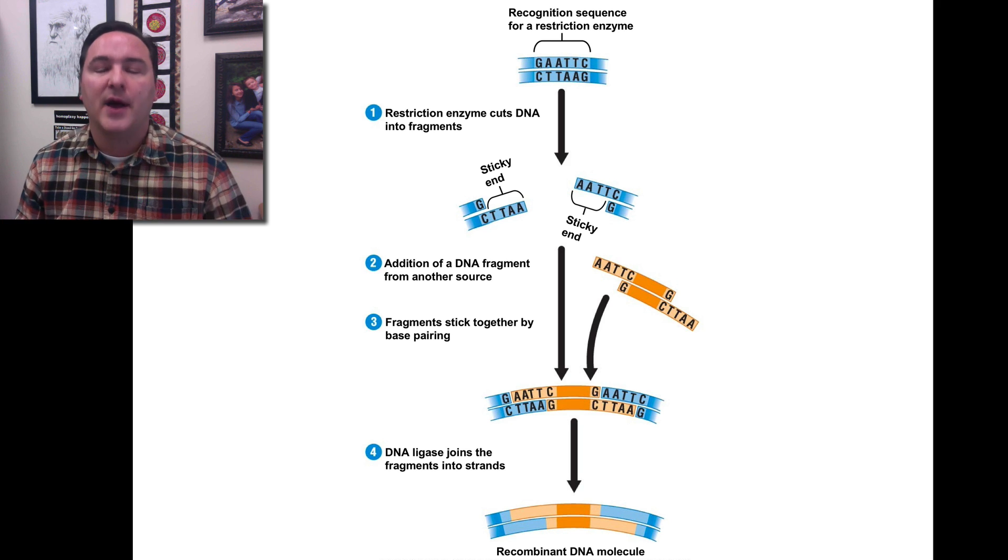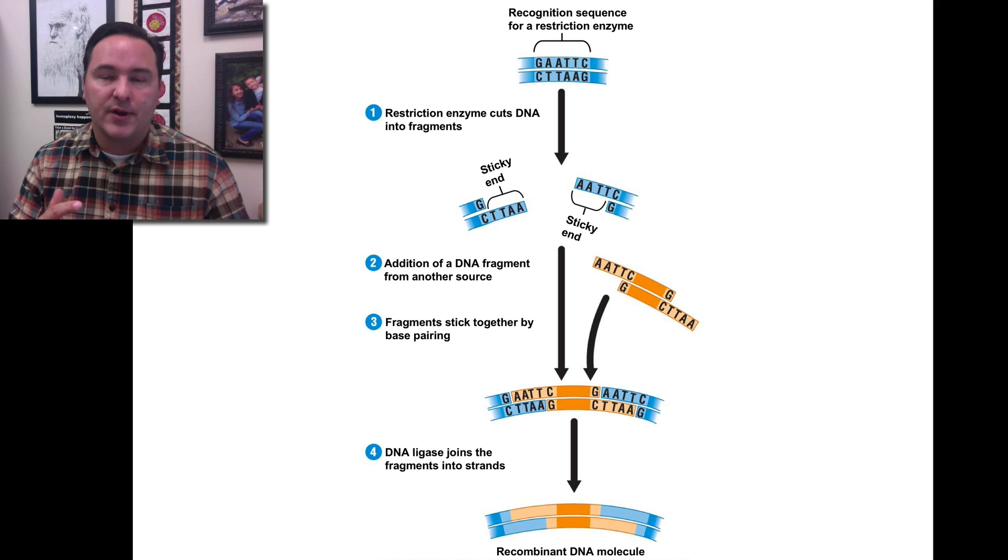and we can do this with all types of organisms. This is how we make genetically modified organisms, is by mixing and matching genes from one organism with another organism.